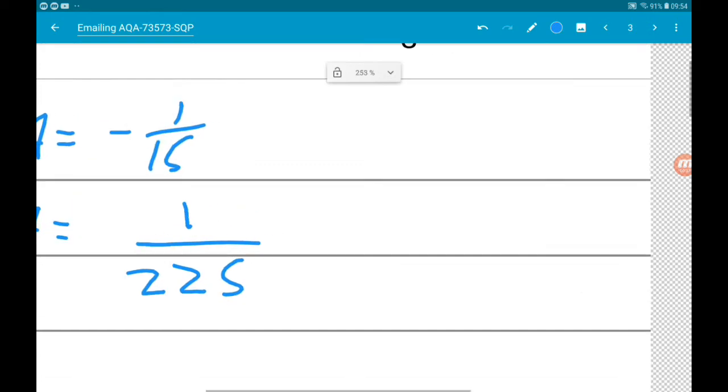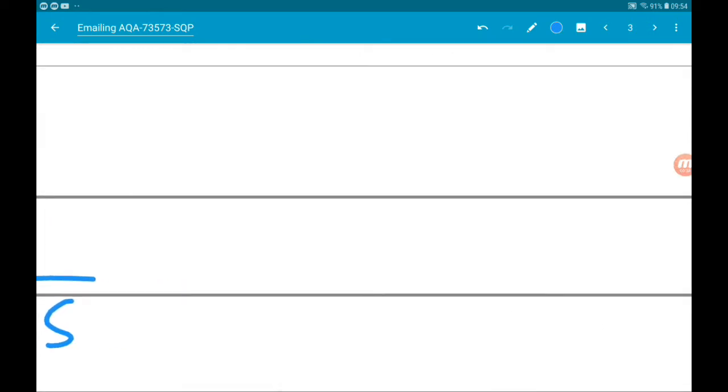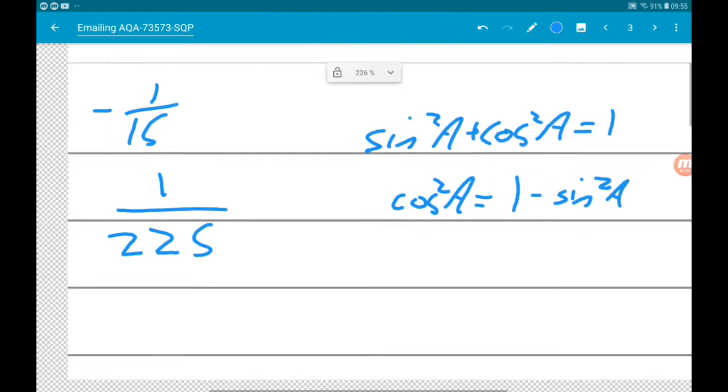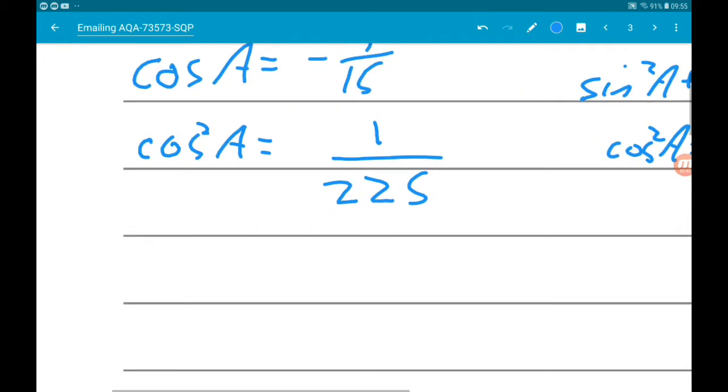Now if sine squared and cos squared is equal to 1, then cos squared is 1 minus sine squared. So we know then 1 minus sine squared A is 1 over 225.